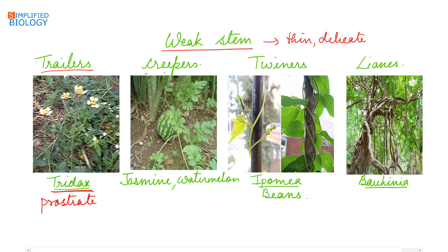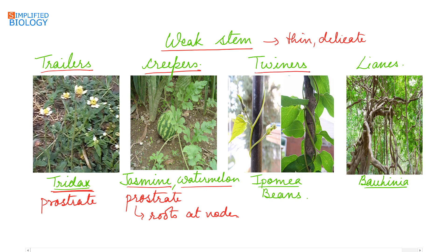Next are creepers — also weak stems that grow prostrate on the surface of the soil, but they develop roots at the nodes. Examples include jasmine and watermelon. Next are twiners — weak stems in which the stem coils around a support. Examples include Ipomoea (sweet potato) and beans.